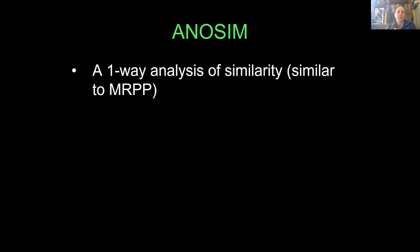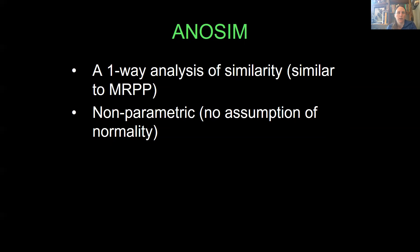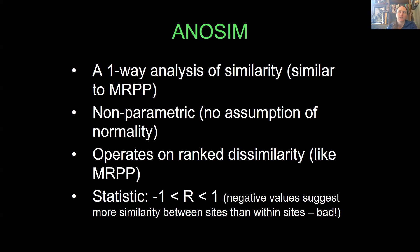ANOSIM is called an analysis of similarity. You can run a one-way ANOSIM, which is pretty similar to MRPP. It just gives you a slightly different statistic. It's also non-parametric, so there's no assumption of normality, and it also operates on ranked dissimilarity, just like MRPP. It gives you a statistic. I should have said that MRPP gives you a statistic called A. ANOSIM gives you a statistic called R.